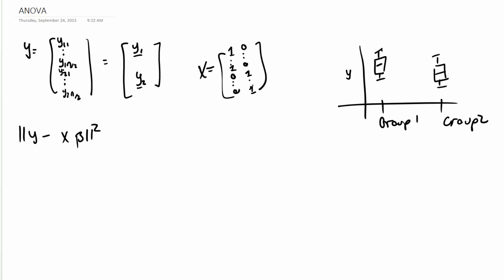So x has n over 2 1s in the first vector and n over 2 1s in the second vector. Now, let's work out what beta hat works out to be in this case. So beta hat works out to be exactly equal to x transpose x inverse x transpose y.